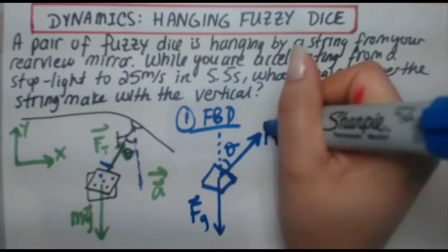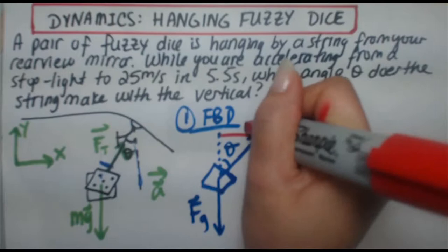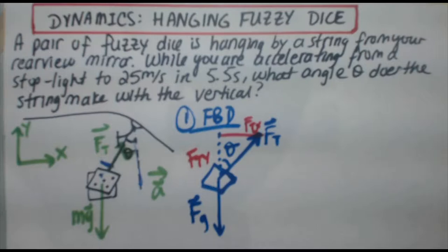I've got my force of tension, I've got my force of gravity. Force of gravity is purely in the negative y direction. My tension force has components in both the positive x and positive y directions. So we've got FTx and we've got FTy.